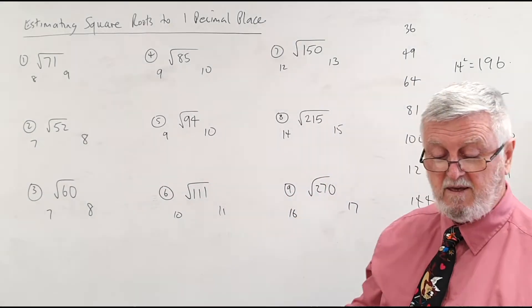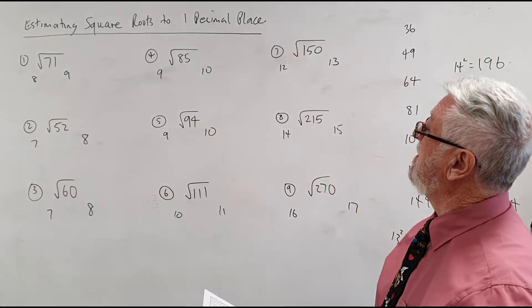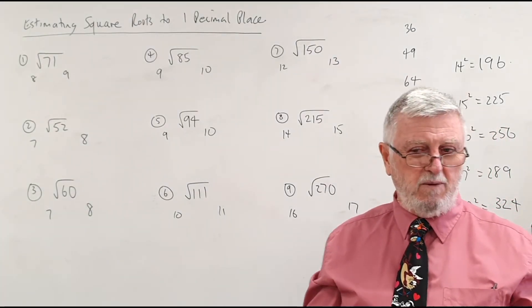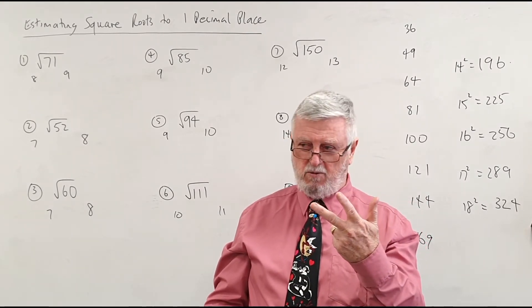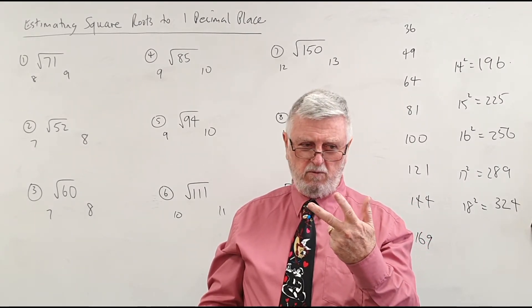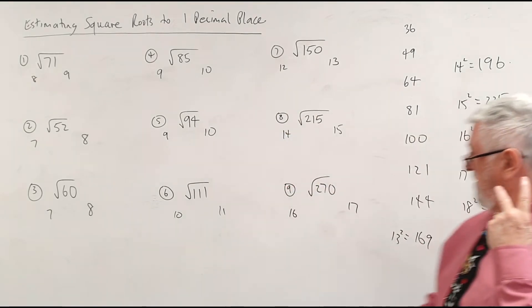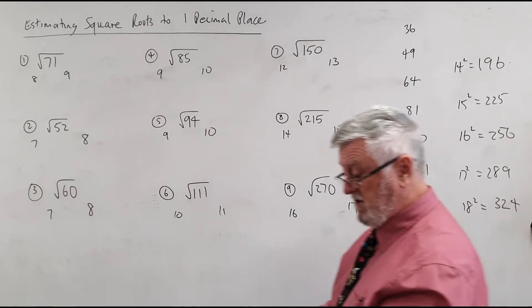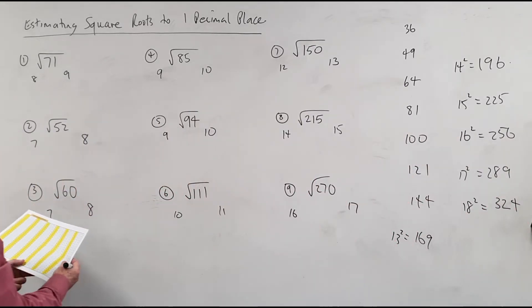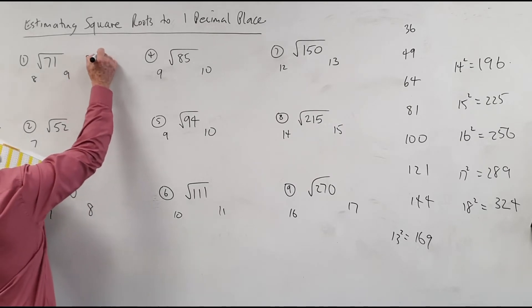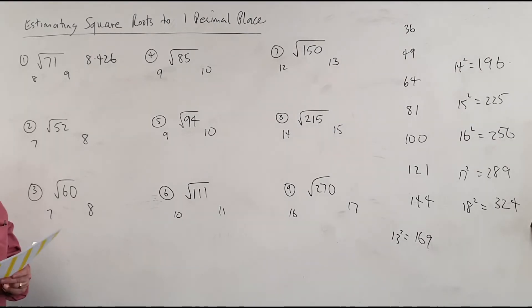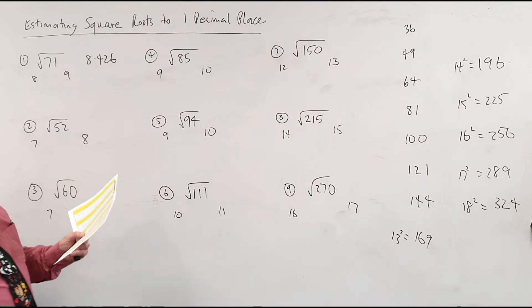You ready? Three decimal places. Number 1, I'll give it to three decimal places. You can know if you're accurate to one. Sometimes if I give it to you three, you can see how close you were. Square root of 71 is 8.426. So who had 8.4? I got 8.5. Wonderful. So there's times when you might just do it and say that's right.